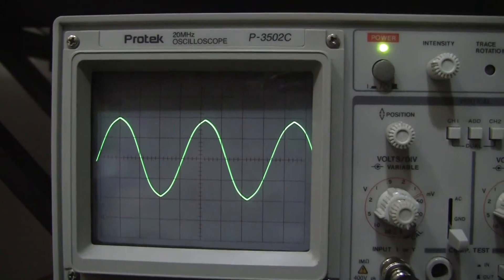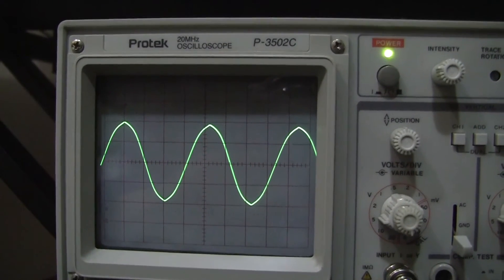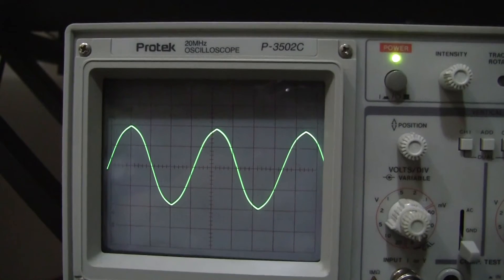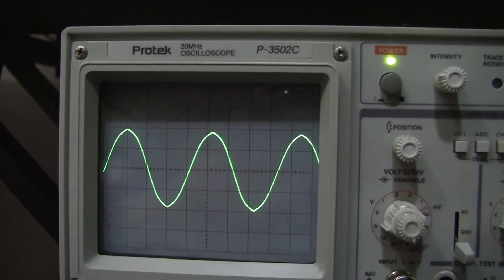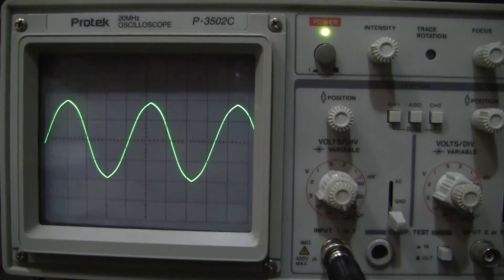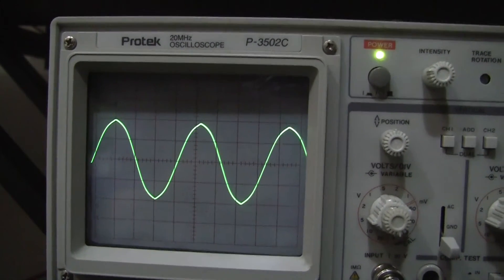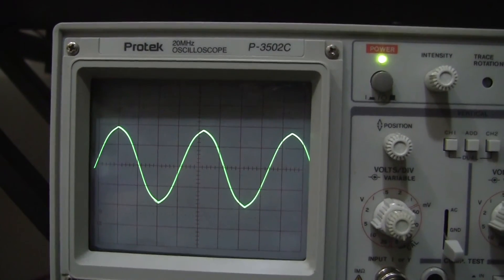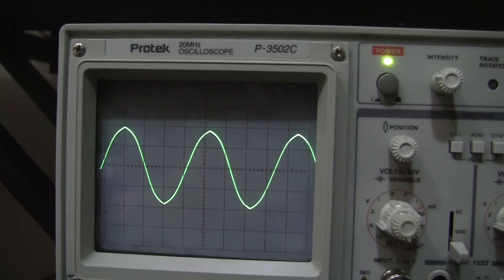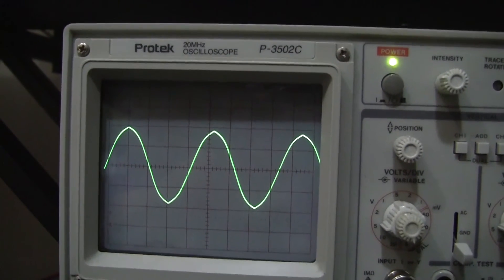Now what happens when we start to offset? Remember that we have our scope tracking on DC so we can add a DC offset to this waveform which will push it up or down by 5 volts.